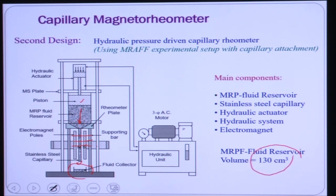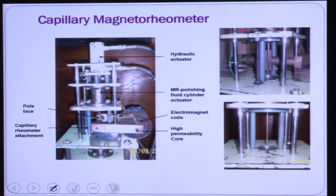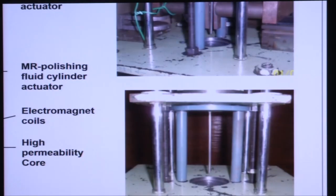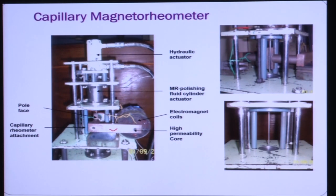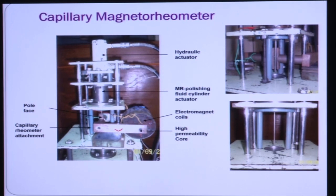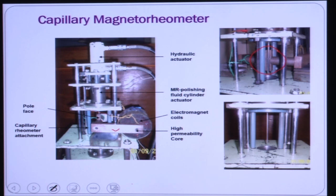The MR fluid container holds 130 cm³ of fluid. This is the experimental setup — the same MRF process setup is used for the capillary rheometer. The C-type magnet has a core material with two flat plates in front, and the capillary is positioned between them. The magnetic field is applied only at that portion through the two flat plates attached to the core material. The polishing media is collected just below the capillary after reaching steady state.